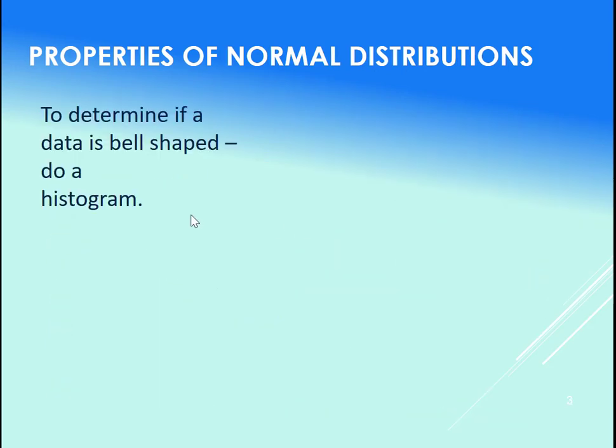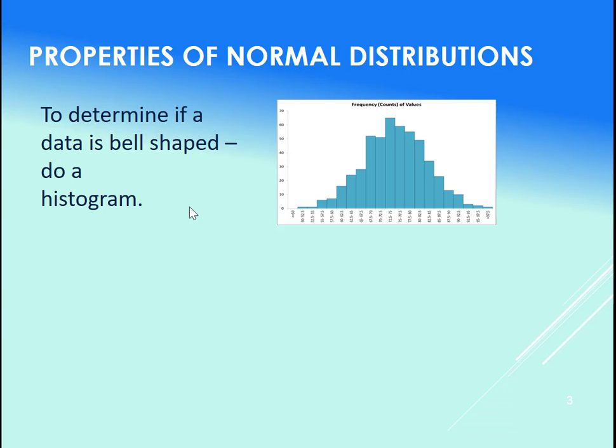Okay, to determine if your data set is bell-shaped or if it is normally distributed, do a histogram. In general, you should start by doing a histogram of your data to see what shape it is. So this one here, it's pretty close to bell-shaped. Nothing's ever perfect, but I would say yes, that's pretty close to bell-shaped.